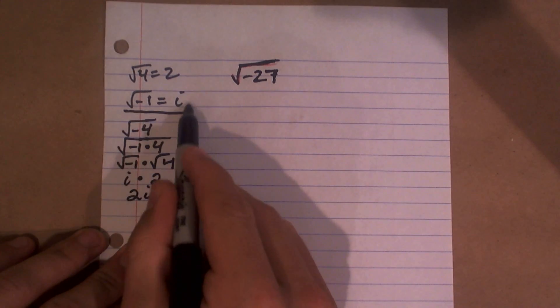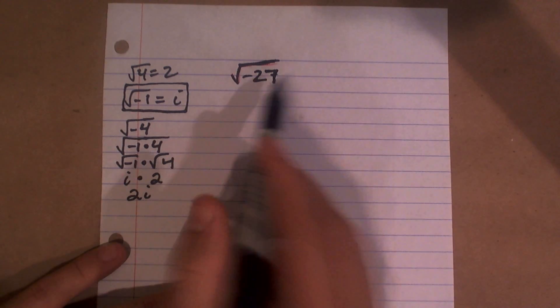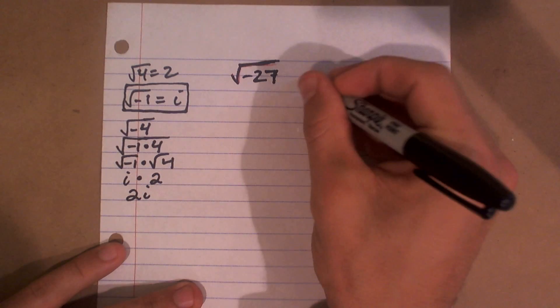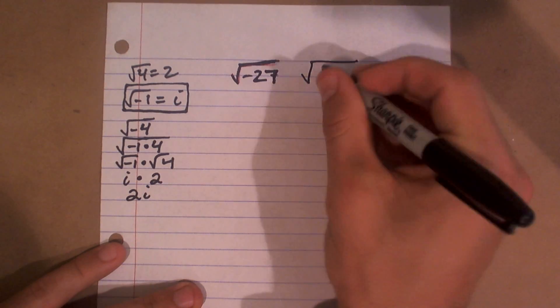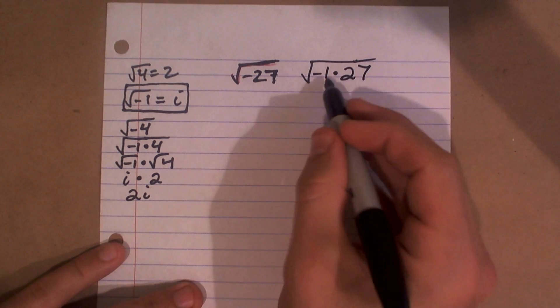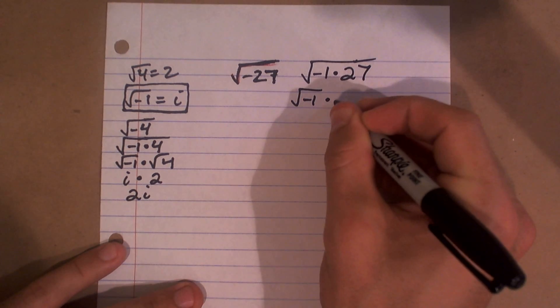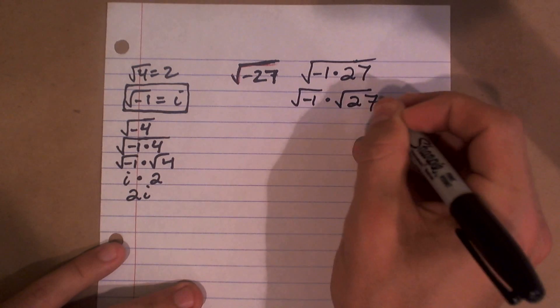So it's important for us to know this, very important to be able to do this. What I'm going to do here is rewrite this as the square root of negative 1 times 27. By using my rules with radicals, I can break this up into the square root of negative 1 times the square root of 27.